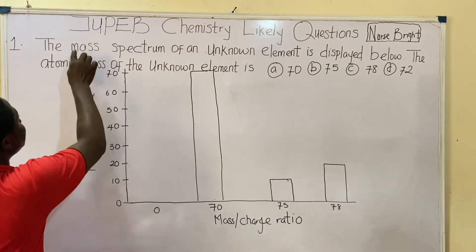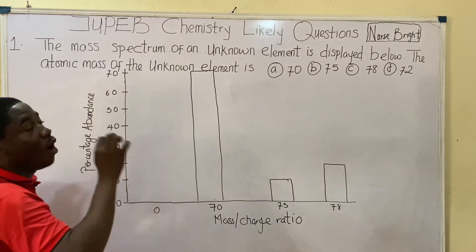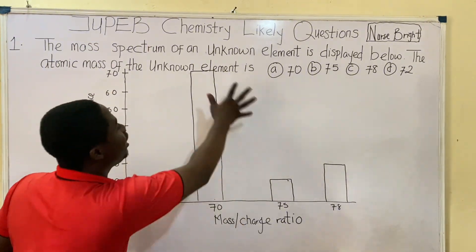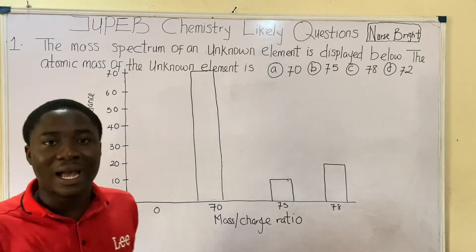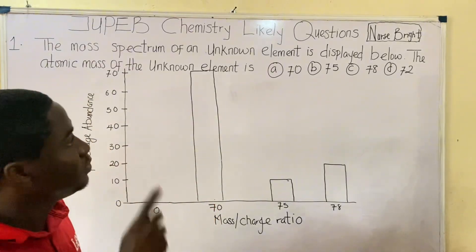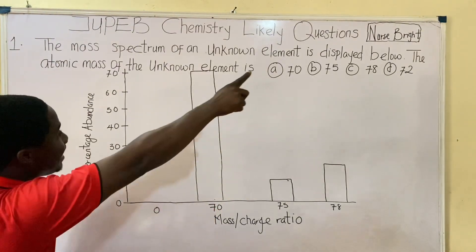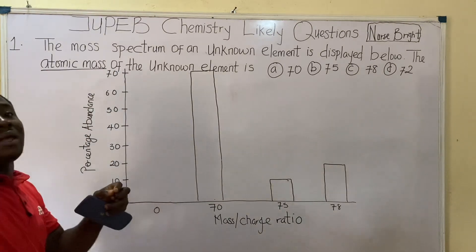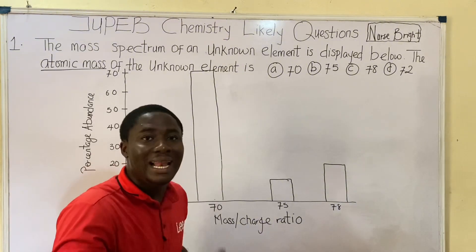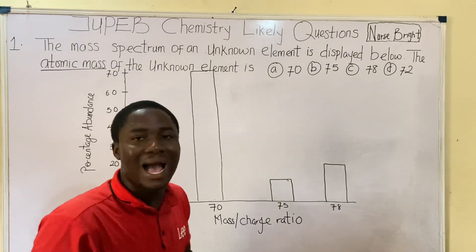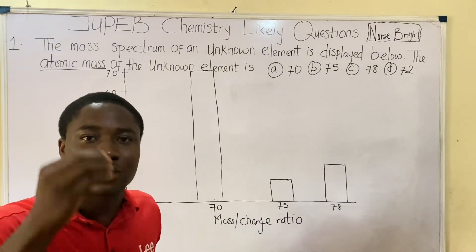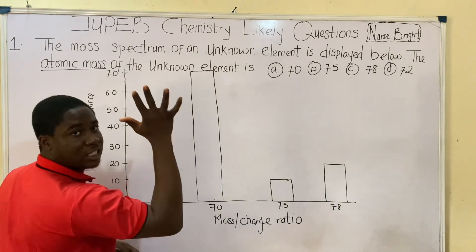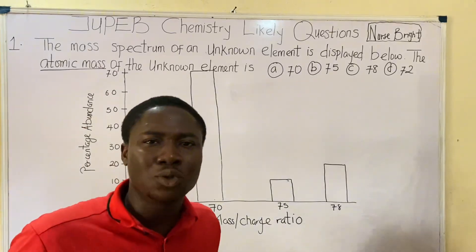The question says: the mass spectrum of an unknown element is displayed below. This is the mass spectrum of that unknown element. The question asks us to determine the atomic mass — this is very important — the atomic mass of the unknown element, given the mass spectrum. So how do we solve it?